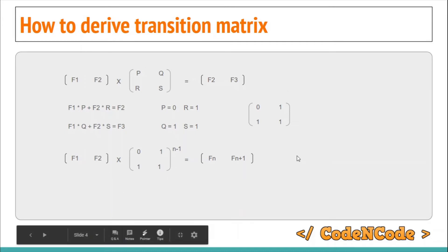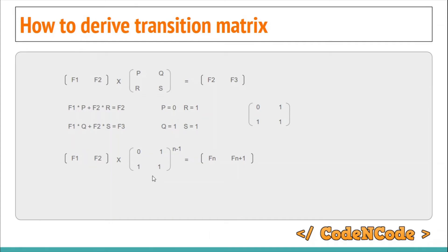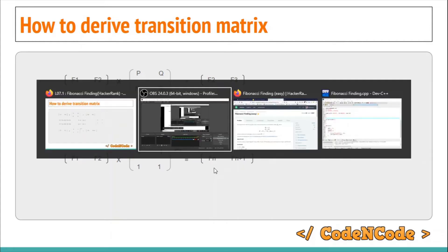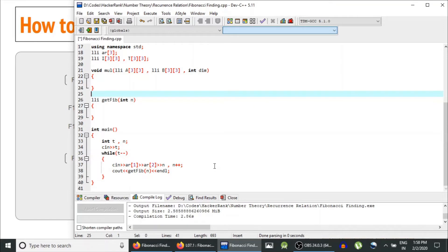All we have to do is check if n is less than or equal to 2 — if yes, return the nth term as the base case. Otherwise, calculate T (the transition matrix) raised to the power n-1, then return the first term: f1 * T[1][1] + f2 * T[2][1], and that would be our f(n), the nth term. Now let's jump into the editor and code.